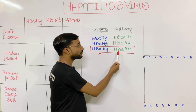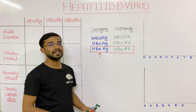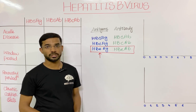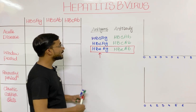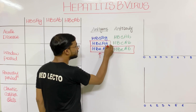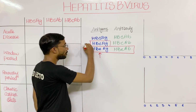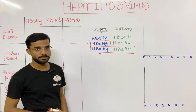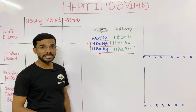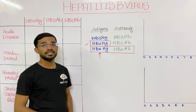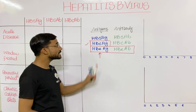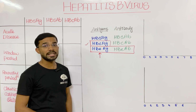If there is a large amount of the e antibody, there is less likelihood of transmitting Hepatitis B to others. Similarly, the Hepatitis B core antigen is not really performed in the lab. So the remaining important markers are: Hepatitis B surface antigen, Hepatitis B surface antibody, and Hepatitis B core antibody.